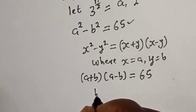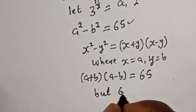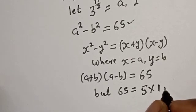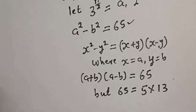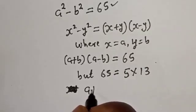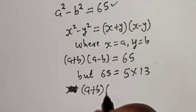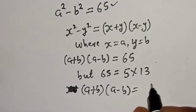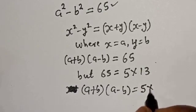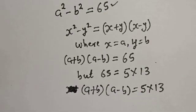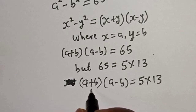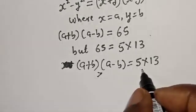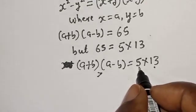Now, 65 is equal to 5 multiplied by 13, an integer solution. So (A plus B) multiplied by (A minus B) equals 5 multiplied by 13. Looking at this, A plus B is greater than A minus B, so therefore 13 is greater than 5.